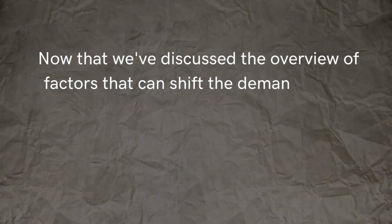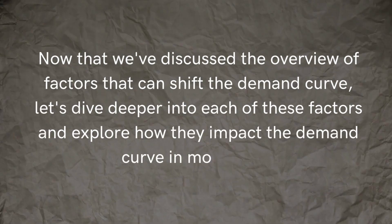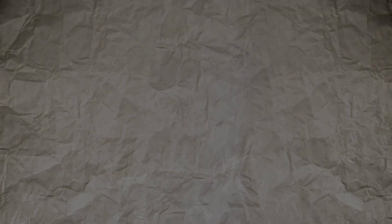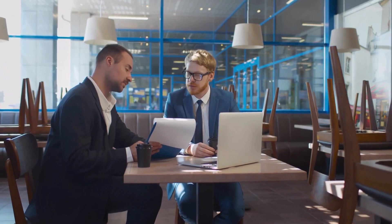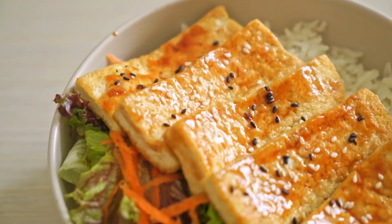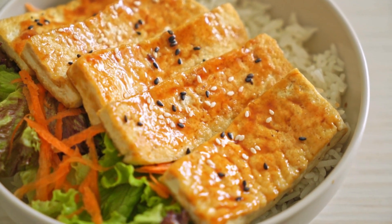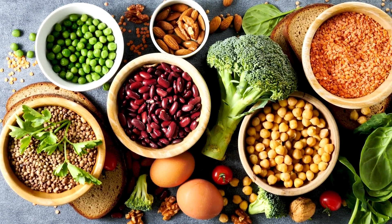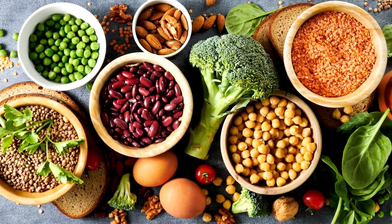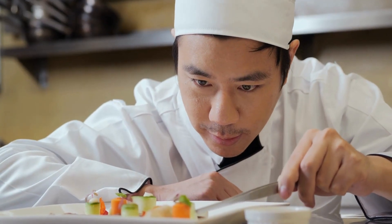Now that we've discussed the overview of factors that can shift the demand curve, let's dive deeper into each of these factors. First, let's take a look at consumer preferences. Imagine you're a restaurant owner who has noticed that your sales of plant-based options have been increasing steadily over the past year. This could be due to changing consumer preferences as more people adopt vegetarian or vegan diets. By keeping up with these changes, you can adjust your menu offerings to meet the demands of your customers and stay competitive.